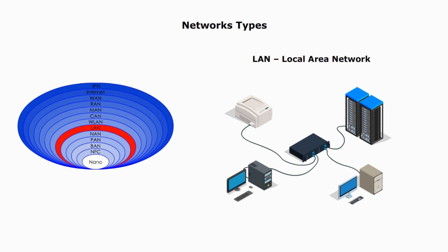LAN can be small or large, ranging from a small network at home to a network of thousands of users. Ethernet and Wi-Fi are the two most common technologies in use for local area networks.